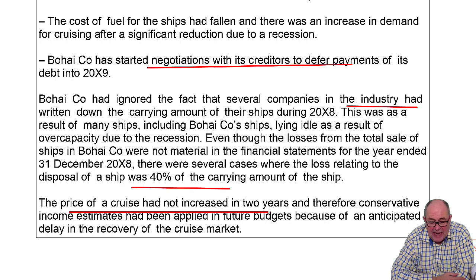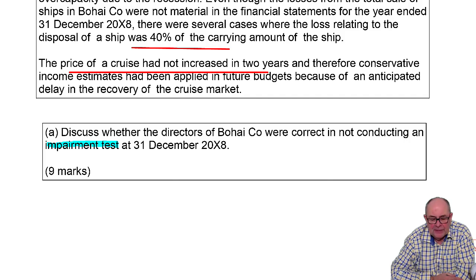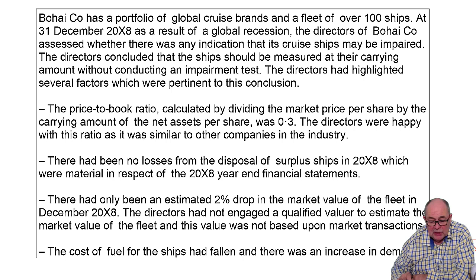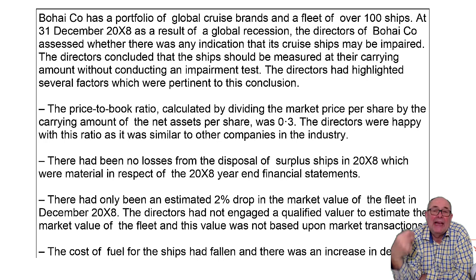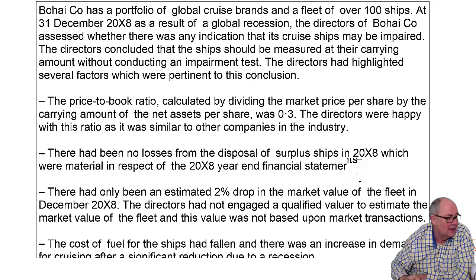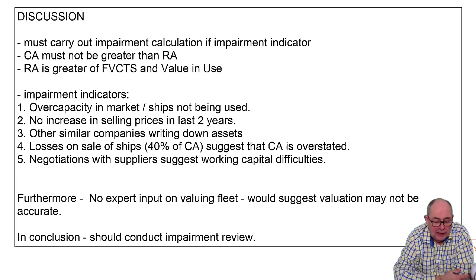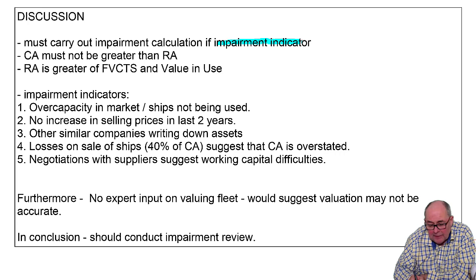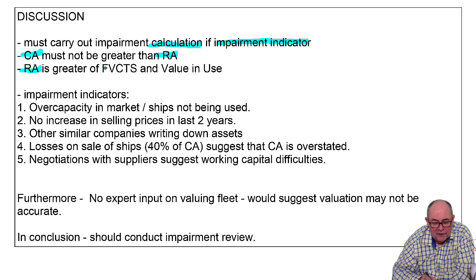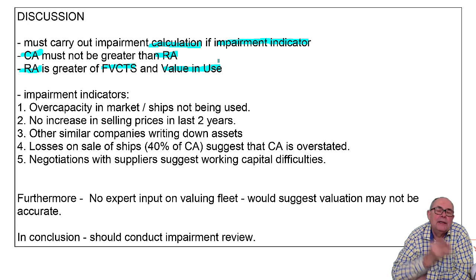The directors, understandably, don't particularly want to do the calculation in case they get a big loss in their profit and loss account. So bring together your knowledge of impairment and the scenario. Explain some of those impairment indicators and the conclusion you would draw. If there is an impairment indicator, you must do the calculation, comparing carrying amount and recoverable amount — which takes account of fair value and also value in use.